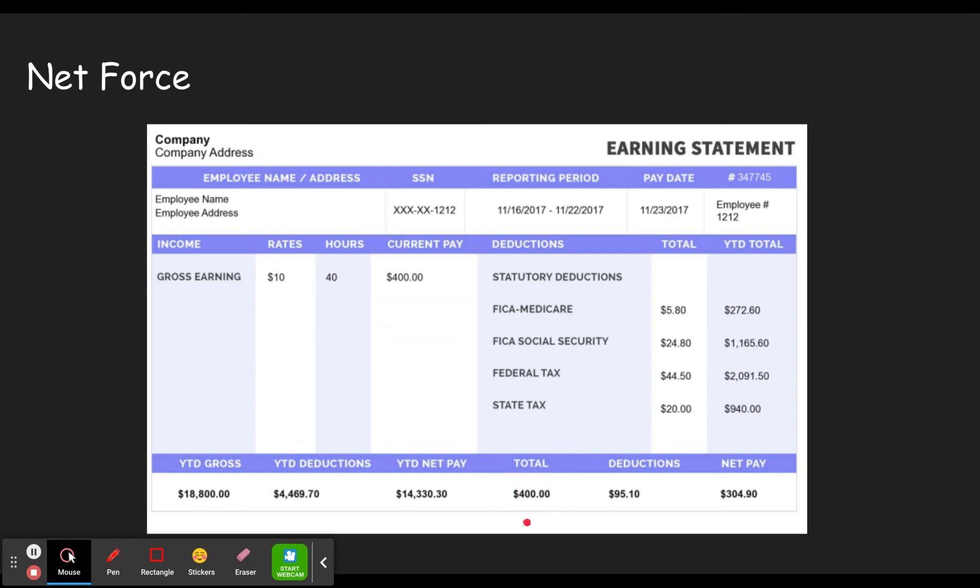So this is the gross amount that the person made that week, $10 an hour for 40 hours. They made $400, but then they got all this money taken out for different kinds of taxes. Those are known as your deductions.